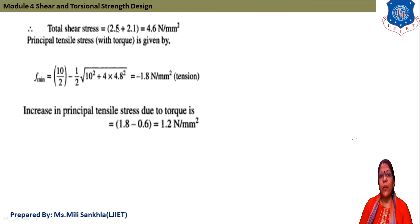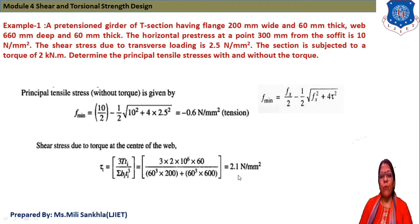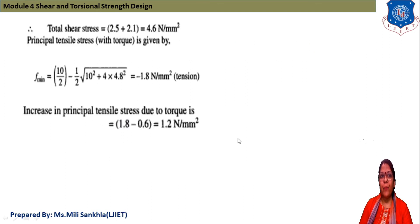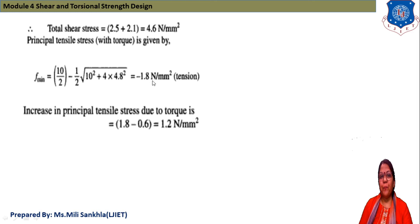Total shear stress = 2.5 + 2.1 = 4.6 N/mm². Now, the principal tensile stress with torque: F_min = 10/2 − (1/2)√(Fx² + 4τ²) = 10/2 − (1/2)√(10² + 4 × 4.6²), giving an answer of −1.8 N/mm² (tension). The increase in principal stress due to torque is 1.8 − 0.6 = 1.2 N/mm².